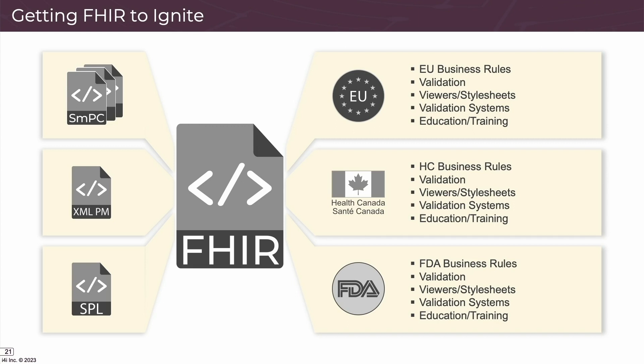Each health authority will need to create their own set of business rules, validation, and viewers or style sheets for displaying the files, as well as their own internal validation systems. They'll have to educate and train their resources and stakeholders. The FDA is already at work — a draft implementation guide is in progress, and they're experimenting with different approaches to transitioning SPL submissions into FHIR. One reason the FDA is very interested in this is the 21st Century Cures Act, which specifies that there must be a standardized API access to patient and population data, pointing directly to FHIR.